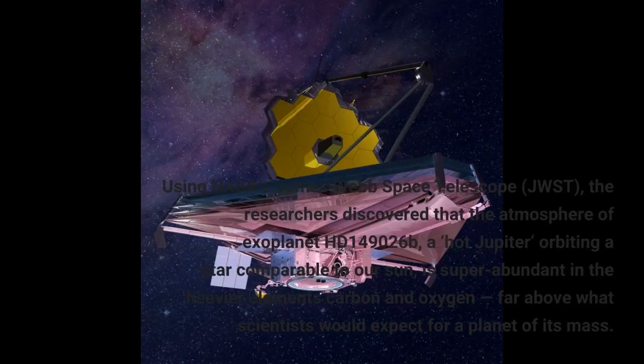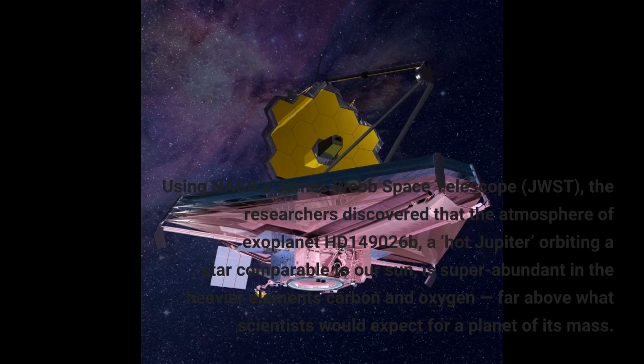Using NASA's James Webb Space Telescope, the researchers discovered that the atmosphere of exoplanet HD 149026 b, a hot Jupiter orbiting a star comparable to our Sun, is superabundant in the heavier elements carbon and oxygen, far above what scientists would expect for a planet of its mass.